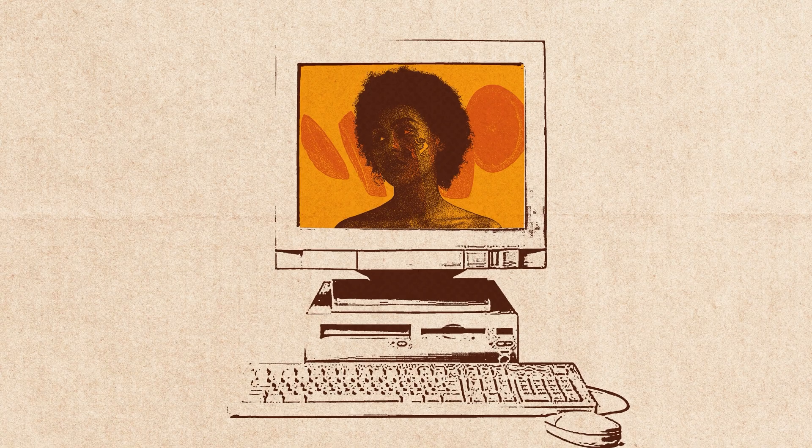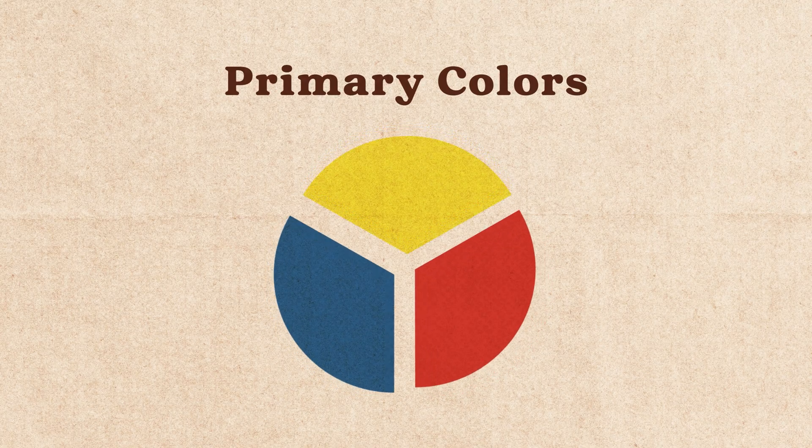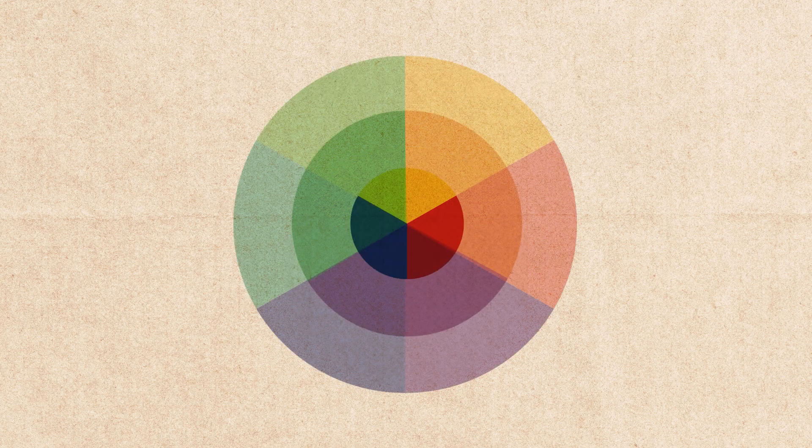Why do you need to know the difference between RGB, CMYK, and RYB? Understanding additive and subtractive mixing methods allows you to anticipate how colors will appear on different mediums. For instance, a vibrant color on your screen may appear muted in print, so being aware of these differences ensures your designs look as intended across different formats. There are three categories of color: primary, secondary, and tertiary. All colors are derived from three primary colors that differ across these three models, and primary colors create secondary and tertiary colors.